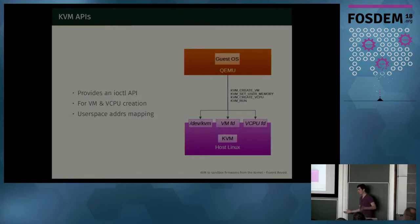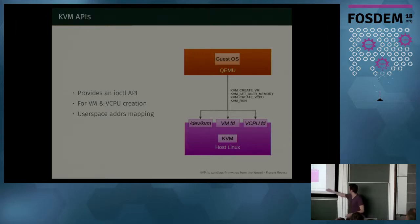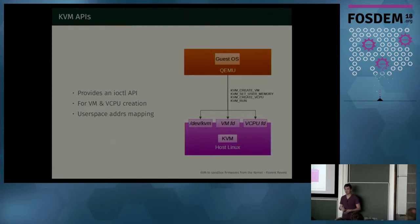KVM exposes virtual devices in /dev. For instance, you have a /dev/kvm file on which you can run IO controls to create your virtual machine. It's standardized across all architectures. For instance, you have a KVM create VM ioctl that returns a file descriptor to a new virtual device representing your virtual machine. Then you can run KVM run — though you need to attach virtual memory and CPU first.